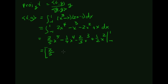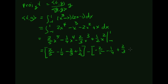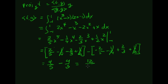Plugging in 1 gives (2/5) - (1/4) - (2/3) + (1/2). Plugging in -1 gives -(2/5) - (1/4) + (2/3) + (1/2). When subtracting, the -(1/4) and +(1/2) terms cancel in pairs, leaving 4/5 from the x⁵ terms and -4/3 from the x³ terms. Converting: 12/15 minus 20/15 gives -8/15.